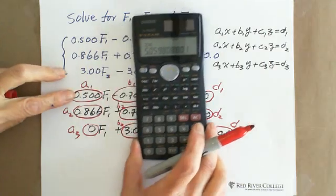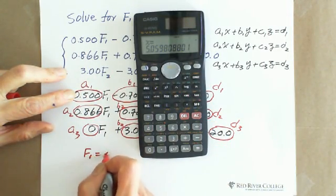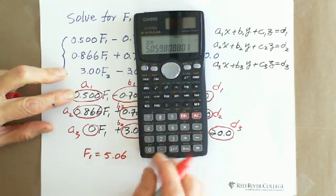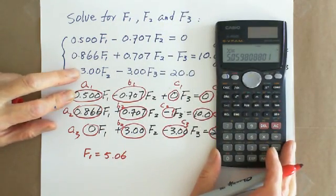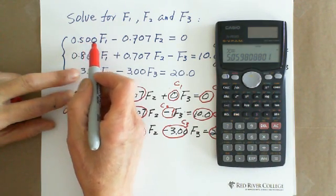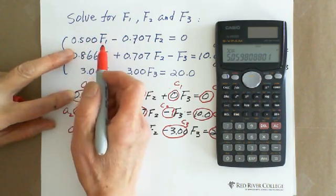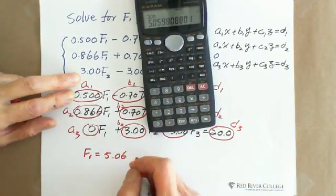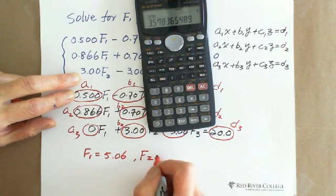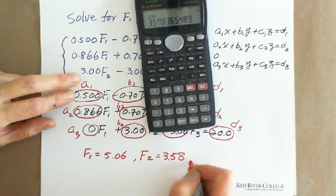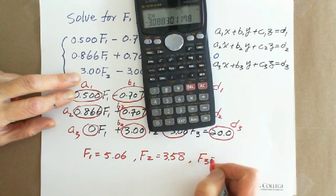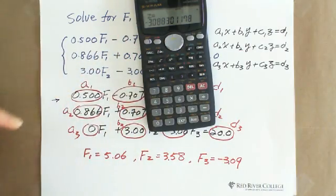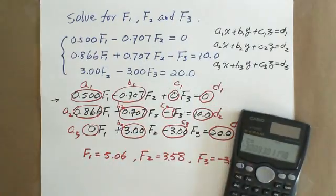The answer is X means F1. So you got F1 equals 5.06. The reason is for the significant digits - three sig figs here, three sig figs there, so we need to keep three sig figs, which is 5.06. And F2 equals 3.58, F3 is negative 3.09.